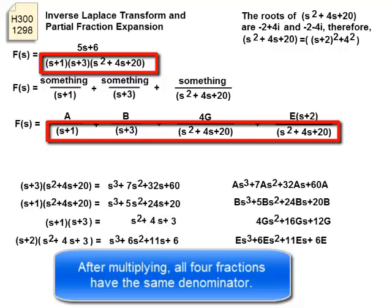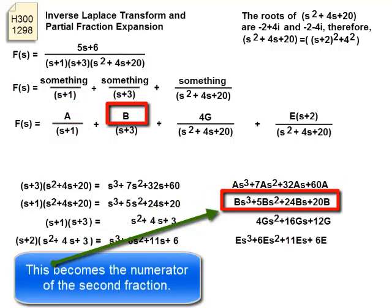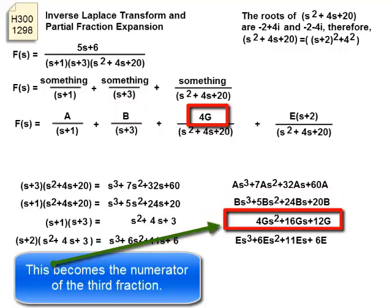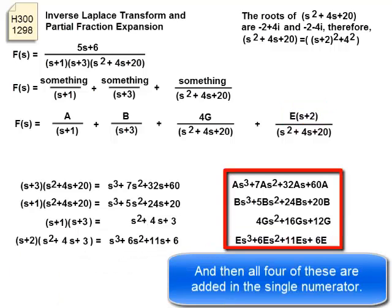After multiplying, all four fractions have the same denominator. This becomes the numerator of the first fraction, this becomes the numerator of the second fraction, this becomes the numerator of the third fraction, this becomes the numerator of the fourth fraction. And then all four of these are added in the single numerator.